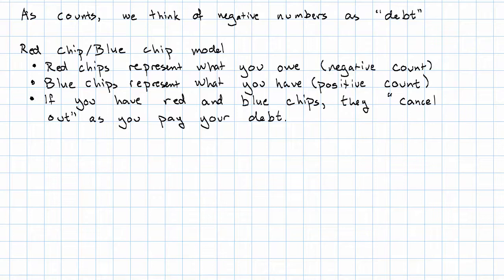So red chips represent what you owe, so they're a negative count. Blue chips represent what you have, so they're a positive count. And if you have both red chips and blue chips, they cancel each other out. You get rid of them as you pay off your debt.